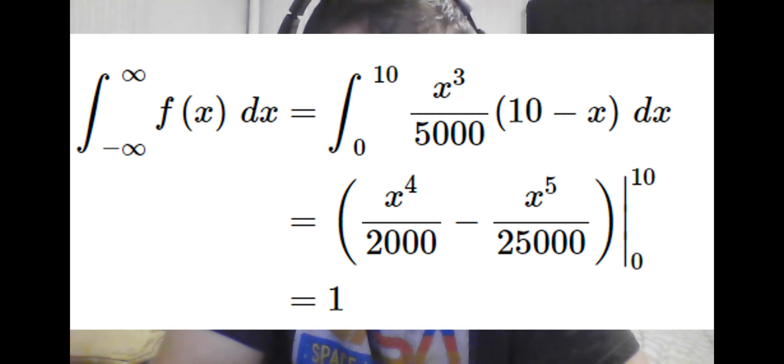So now we compute the indefinite integral, compute the value at 10 and subtract the value at 0, which nicely enough is 0 so we don't need to worry about it. And in conclusion, the value at 10 calculates to 1, so we have satisfied the probability density function requirements.